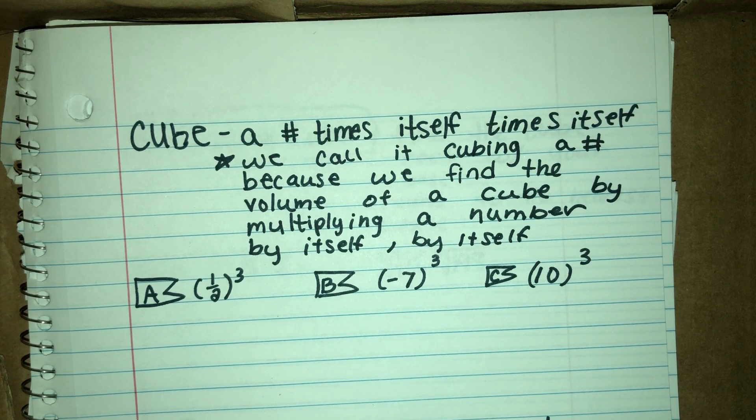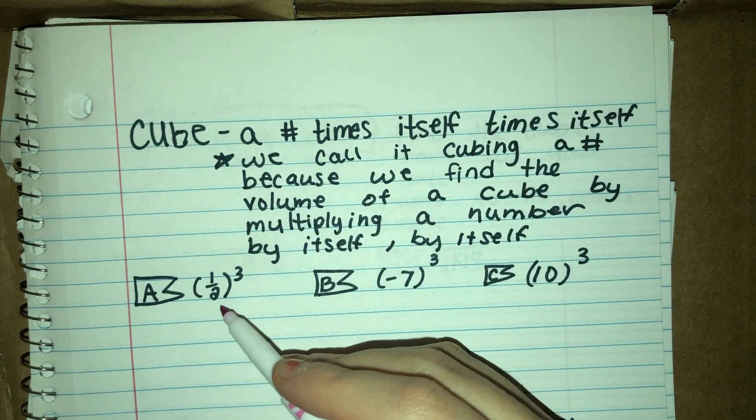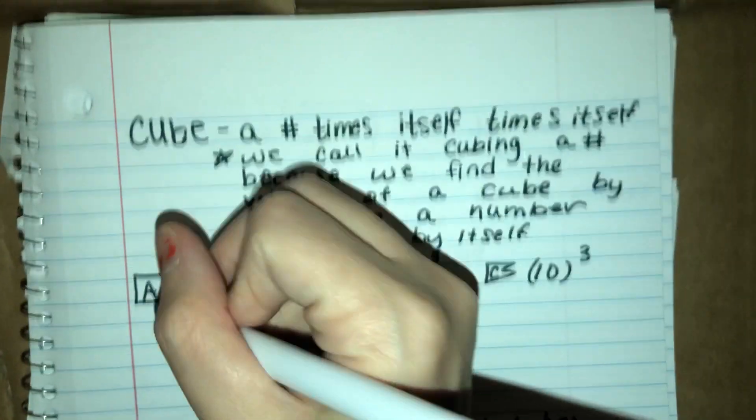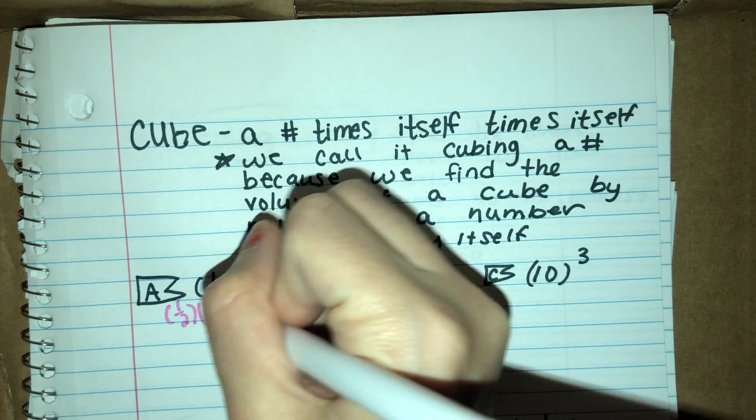It's pretty similar to exponents and squares. The base tells you the number and then the exponent tells you how many times you multiply that number. So in this case, we would do 1/2 times 1/2 times 1/2.